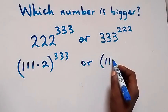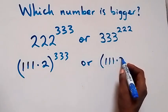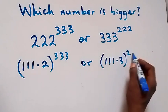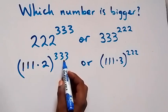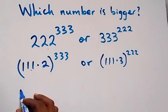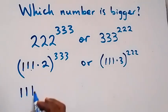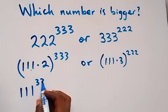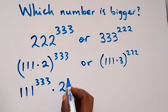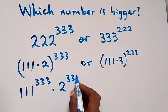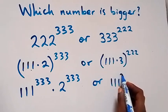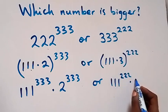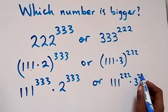Then raised to power 222. From the law of indices, this power will affect both numbers. We can write this as 111 raised to power 333 times 2 raised to power 333, or on this side we can write this as 111 raised to power 222 times 3 raised to power 222.